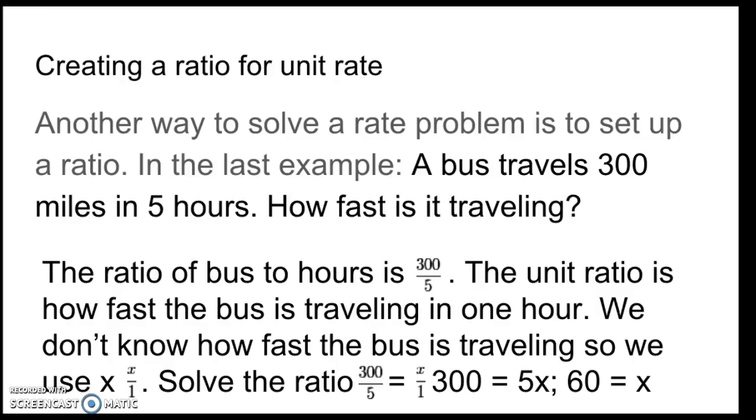So, creating a ratio for a unit rate. Another way to solve a rate problem is to set up a ratio. In the last example, a bus travels 300 miles in five hours. How fast is it traveling? So, the ratio of the bus to hours is 300 over five. This one here. The unit ratio is how fast is the bus traveling in one hour.